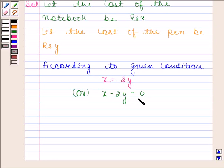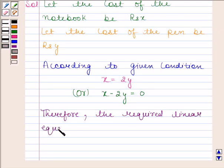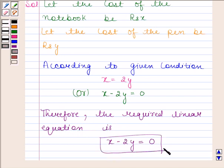Clearly this is a linear equation in two variables. Therefore, the required linear equation is x minus 2y is equal to 0. This is our required answer.